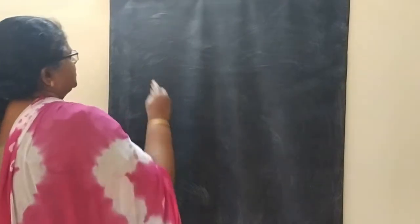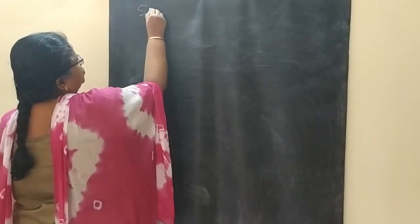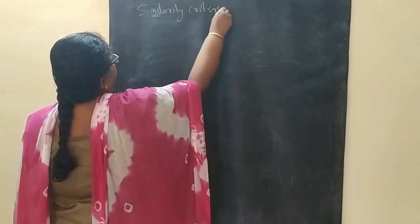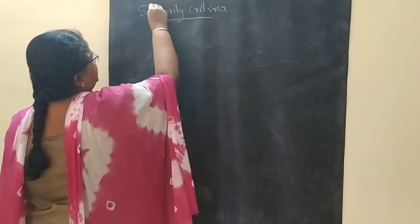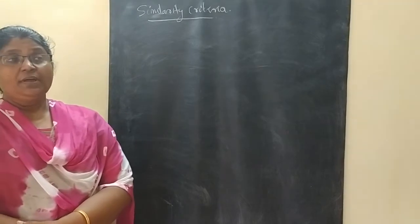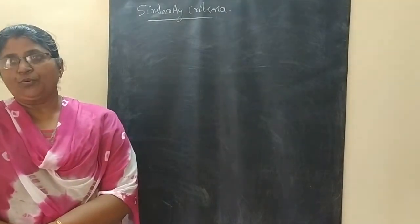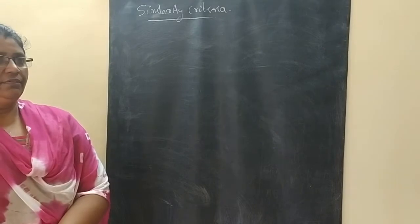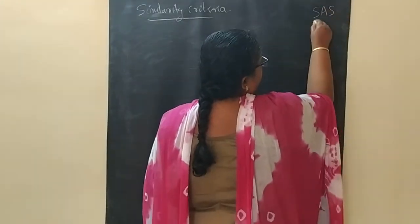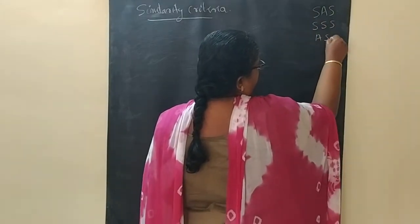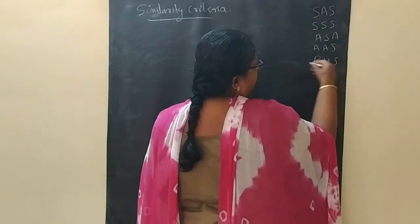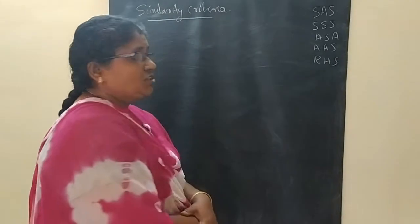Next we are coming to similarity criteria. In 9th class you studied some axioms for proving two triangles are congruent. The axioms you studied are SAS, SSS, ASA, AAS, and RHS. These are the axioms you studied.